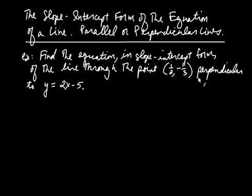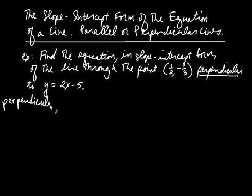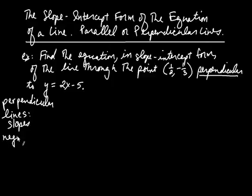The first thing that jumps out is that our line is perpendicular to this line. Lines that are perpendicular have slopes that are what we call negative reciprocals. That phrase, negative reciprocals, all that means is that you take the reciprocal and then you take the negative.